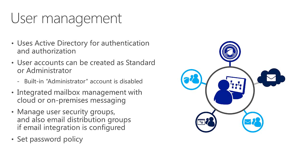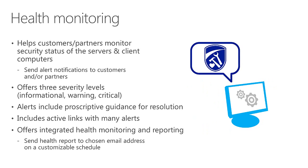Another thing we've done to help ensure the environment is healthy is provide robust but simple-to-use monitoring. This helps customers as well as partners monitor the status of the environment — security status, update status, and so on — not just for the Essentials server itself, but also for other servers and all client computers in the environment. Alerts generated can be sent to the customer admin or to partners. Alerts are collected into three tiers of severity: informational, warning, and critical, giving some indication of how quickly you might need to address the issue. Each alert also provides prescriptive guidance on how to resolve it, and in many alerts there's a link that takes you directly to the tool or resource to resolve that issue.